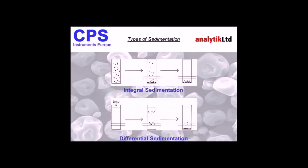Integral is the oldest of the sedimentation methods. What I've got here to illustrate this is a column — a beaker — full of particles and fluid. If you imagine you have a light source at one end of the column and a detector at the other end, the light source is travelling through the chamber, through the fluid and particles, and to the detector. So if you start off with a chamber filled with fluid and particles, the detector beam at the bottom will pass through the fluid and measure particle concentration.